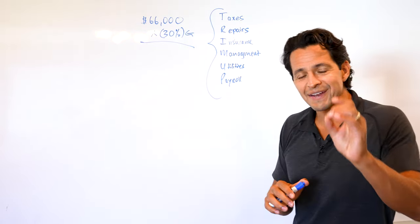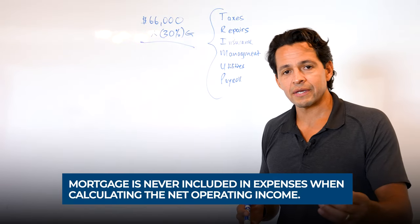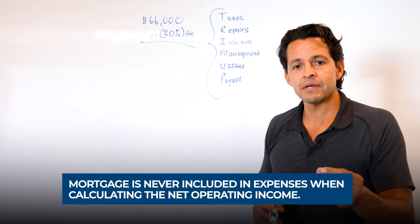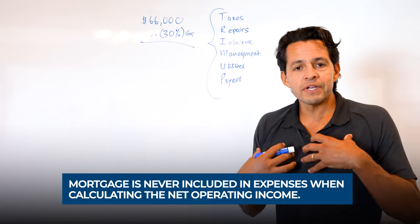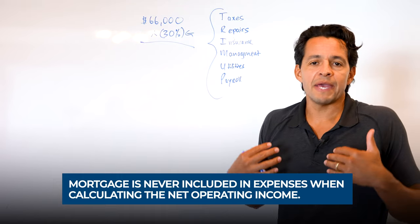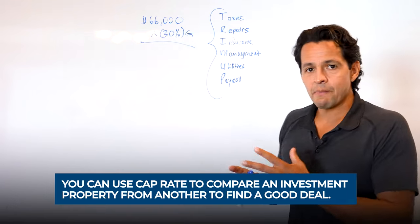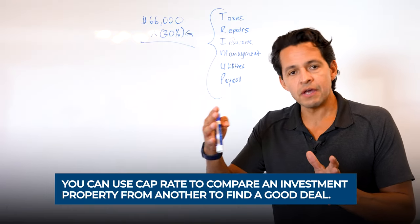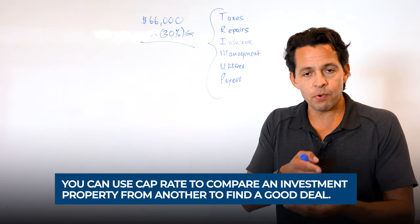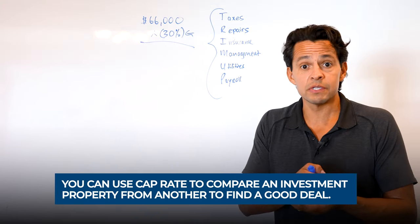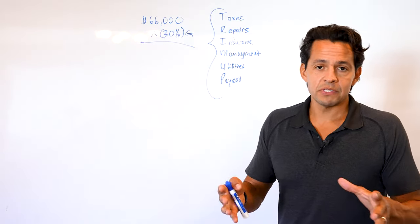You're going to notice that one item that you're probably expecting to see here, but you don't, is mortgage. That's correct. Mortgage will never be included in the operational expense of the property. Reason being is my mortgage might be different than your mortgage. My down payment, the amount that I borrow will be different. So the purpose of cap rate is that we could compare one investment to another similar investment. And if we know how to use cap rate, we could quickly assess which deal is better.